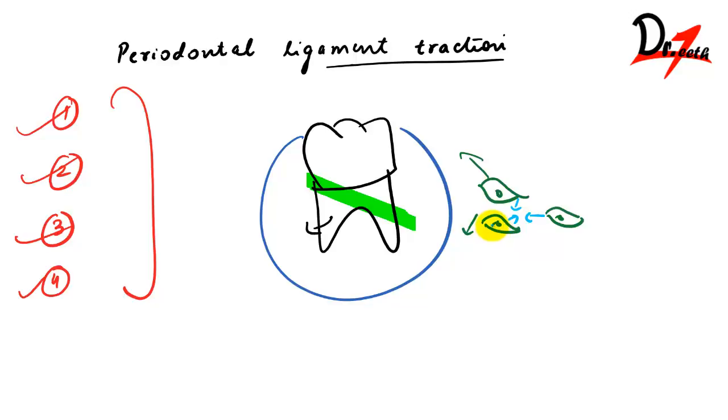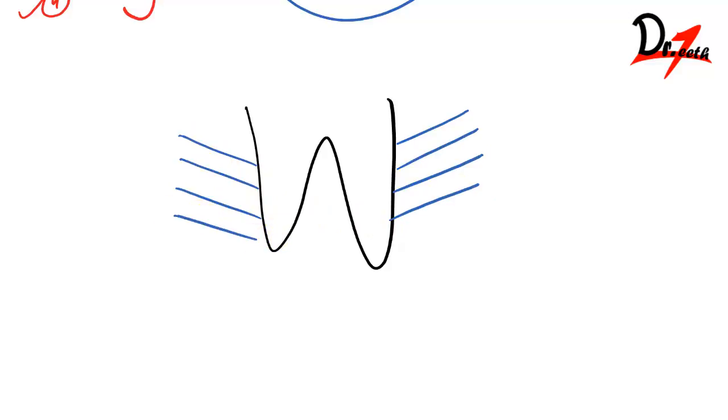To imagine this, let's say we have our root here, let's say we have collagen here, and let's say we have fibroblast here.